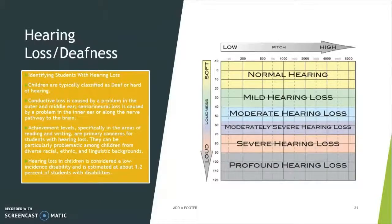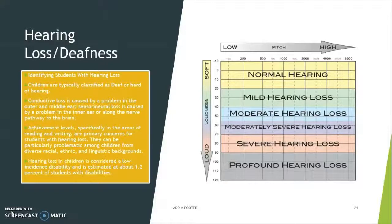Hearing loss and deafness. Identifying students with hearing loss typically involves a hearing test. Children are typically classified as deaf or hard of hearing. Conductive loss is caused by problems in the outer and middle ear. Sensorineural loss is caused by a problem in the inner ear and along the nerve pathway to the brain.